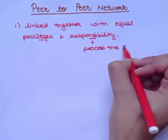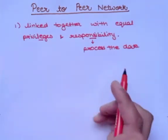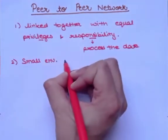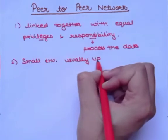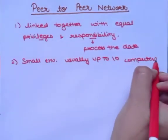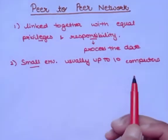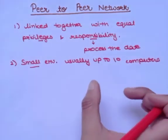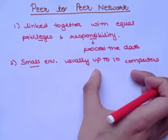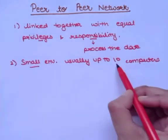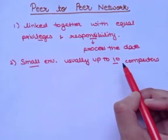Peer-to-peer network is very useful for small environments, usually up to 10 computers. This is because peer-to-peer networks are useful for a small number of computers. For independent connections with more computers, there would be a lot of cables and a very complicated network. So we can only use peer-to-peer when connecting 10 or fewer computer systems.